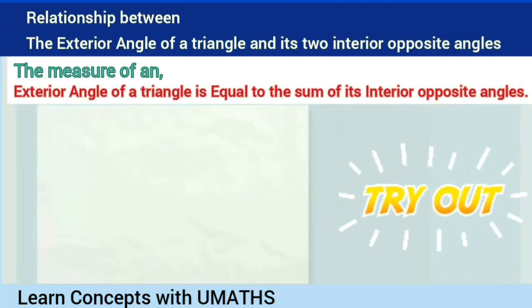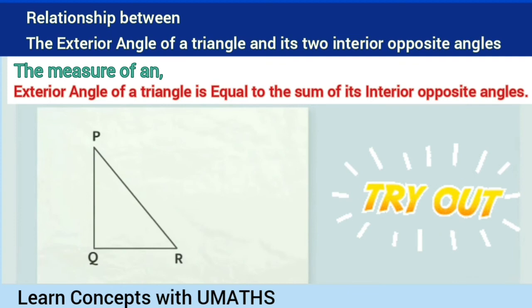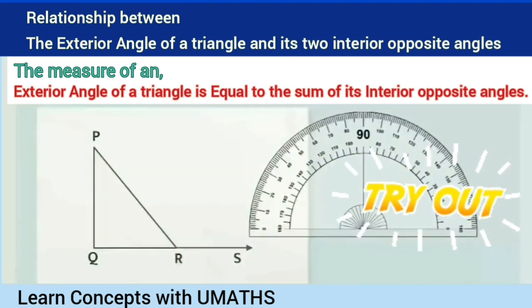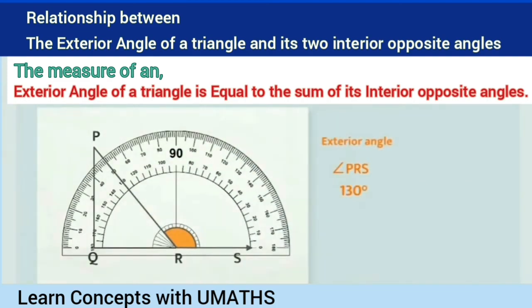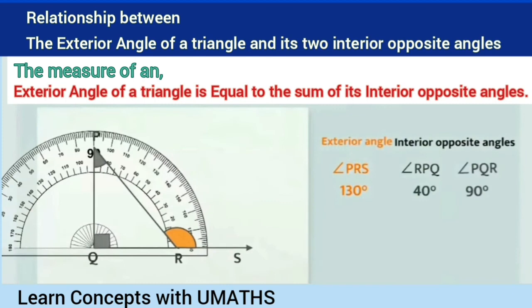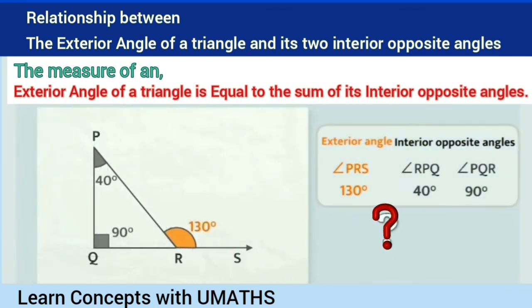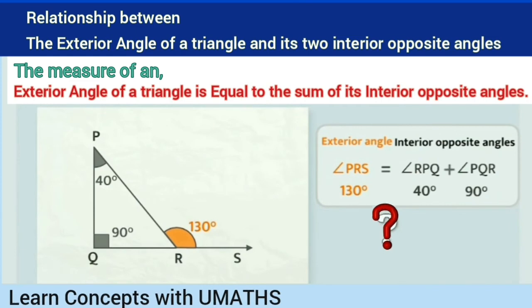You can make any type of triangle and its exterior angles. After making a triangle, you can measure those exterior angles and interior angles with the help of a protractor and check it out whether the property—the exterior angle of a triangle is equal to the sum of its interior opposite angles—will be the same.